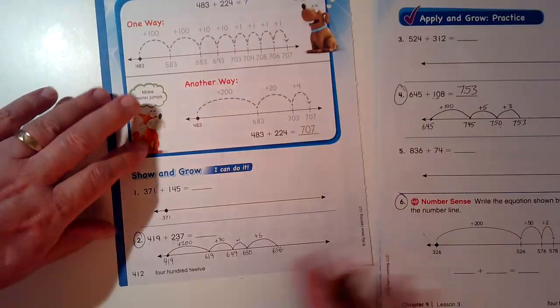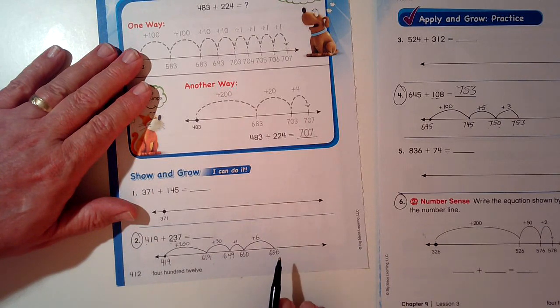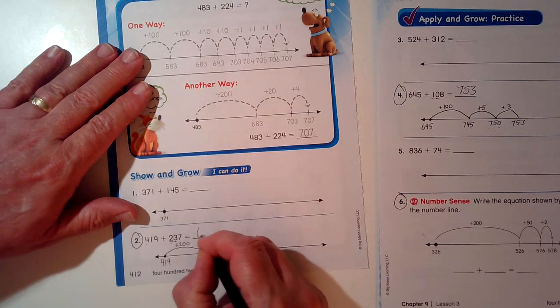Oops, look at that. I would have gotten it wrong on my computer test. I forgot to do that here. 656 up here. 656.